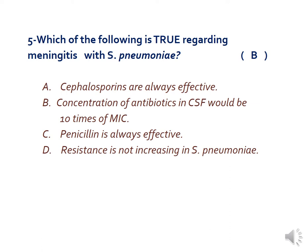The next question asks what is true regarding meningitis with Streptococcus pneumoniae. The answer is B: the concentration of antibiotics in CSF should be 10 times the minimum inhibitory concentration as reported by the laboratory. Pneumococci are sensitive to antimicrobial drugs and early treatment usually results in rapid recovery. The antibody humoral response plays a diminished role. Penicillin is the drug of choice.